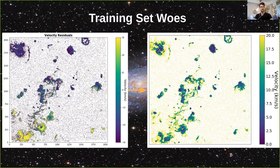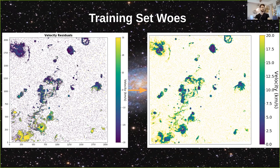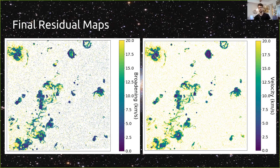The final velocity and broadening maps for the M33 SITELLE cube show velocity performing well. Broadening has some known systematics discussed in the paper, mainly attributed to the presence of multiple emission components the network wasn't trained on. These are the final broadening and velocity residual maps for that M33 SITELLE field.